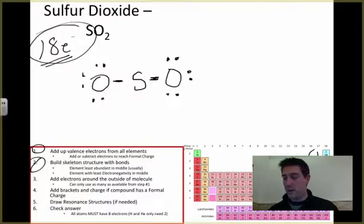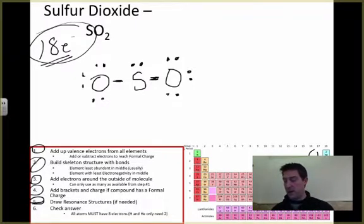So I have two more electrons I can use. Those go right here on the sulfur. Now I've used all my electrons with no formal charge. We'll revisit resonance structures if needed. Let's check our answer. You might see a bit of a problem if you've done enough of these.